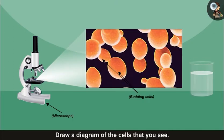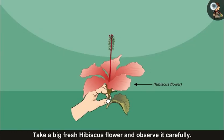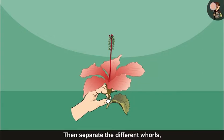To study the floral characteristics by dissecting a hibiscus flower, take a big fresh hibiscus flower and observe it carefully. Then separate the different whorls one by one with the help of a needle.